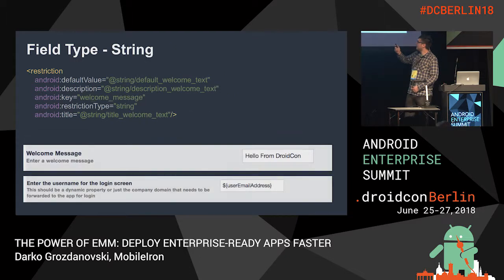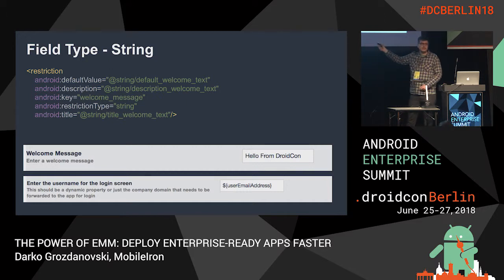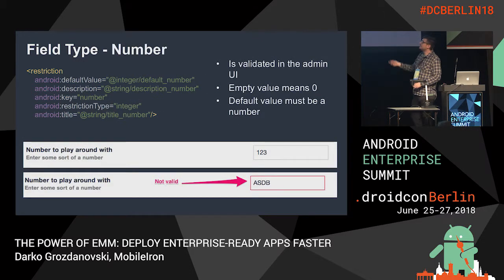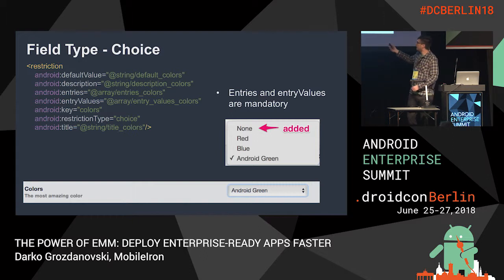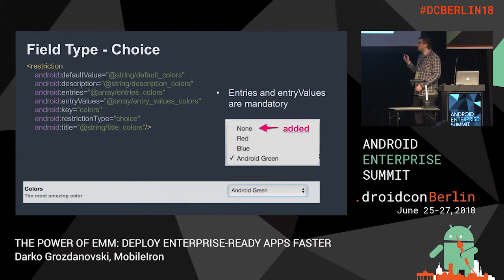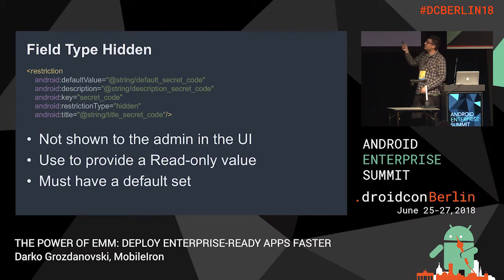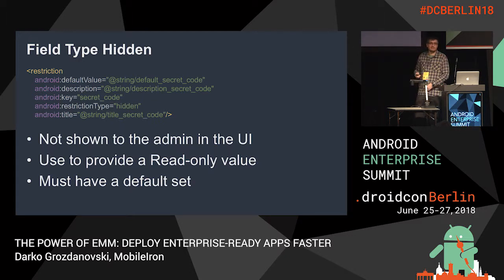Going over the actual restriction types and how they look in the EMM: you can have a boolean field, a string value, and you can indicate dynamic parameters using a dollar sign and brackets - for example, username email address would send the actual user's email address. There are also number inputs, which are validated on the server on the admin side. You can do dropdowns where entries and entry values need to be specified, and multi-select for choosing between multiple options. There is also a field type called hidden, which I've never seen used in practice - if you don't have a clear idea how to use it, just stay away for now.